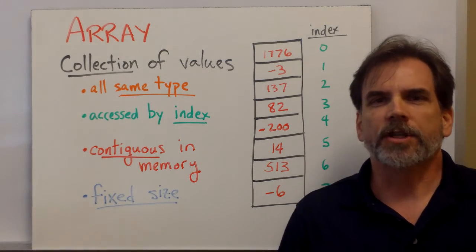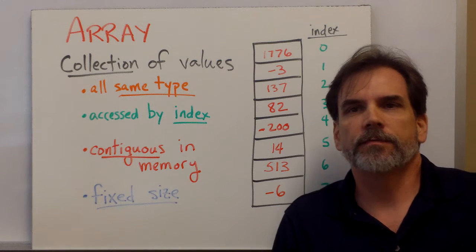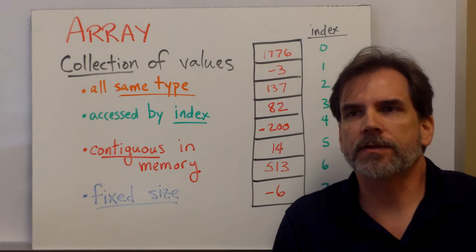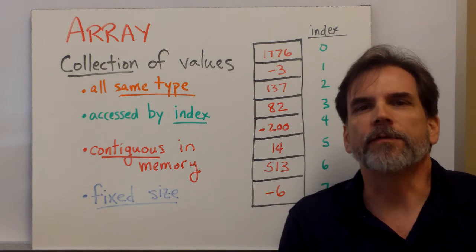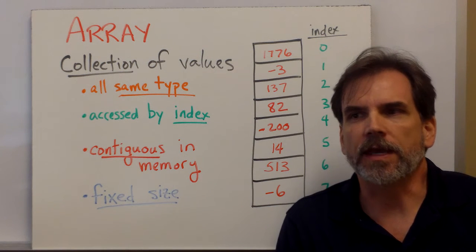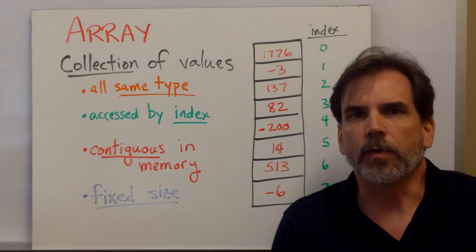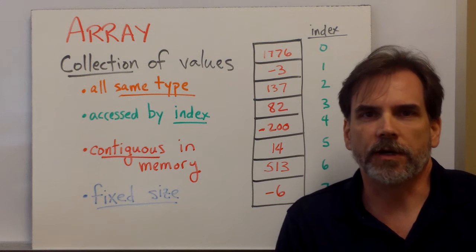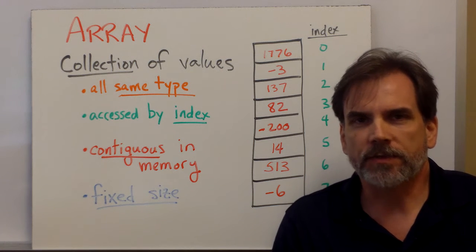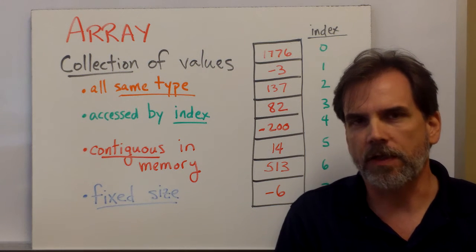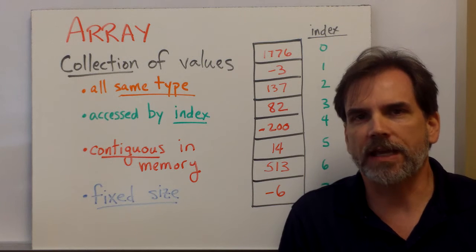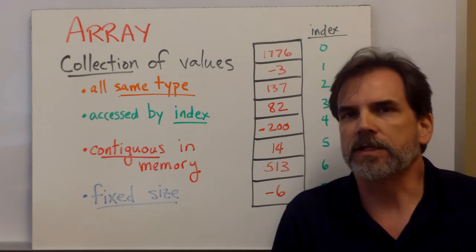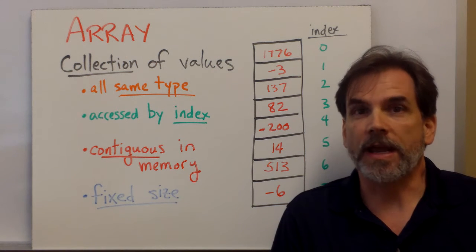Suppose we have a large collection of data values, for example, all of the grades in this class, or the population of the 50 states. So far, we would have to create a variable to hold each value and give each of those variables a different name. But sometimes we just want to treat that whole collection of data as a collection, as a single variable. And C provides us a way to do that, and it's called the array.